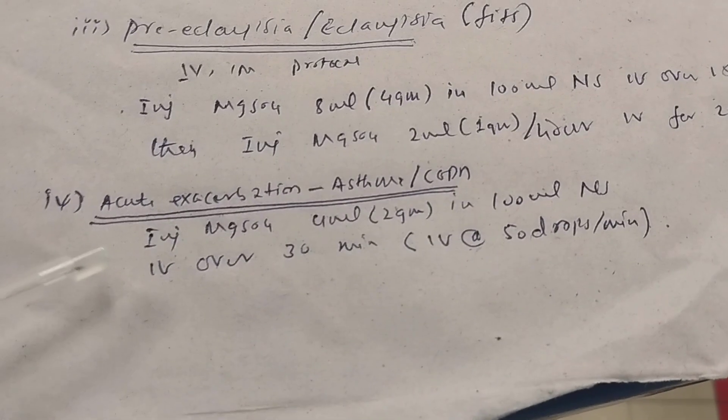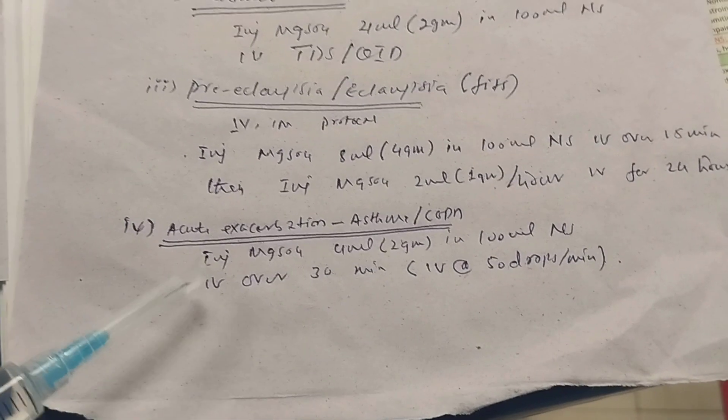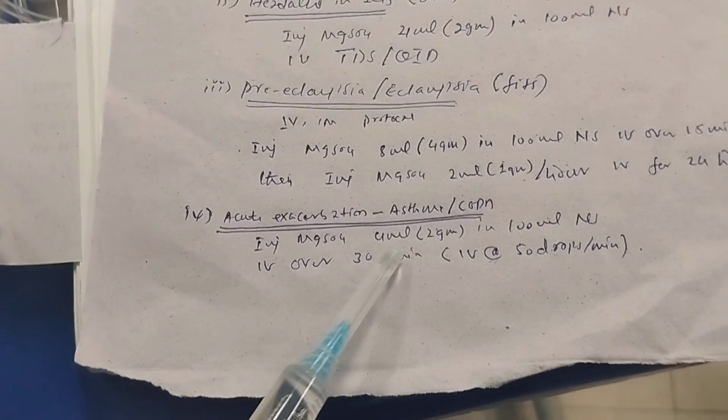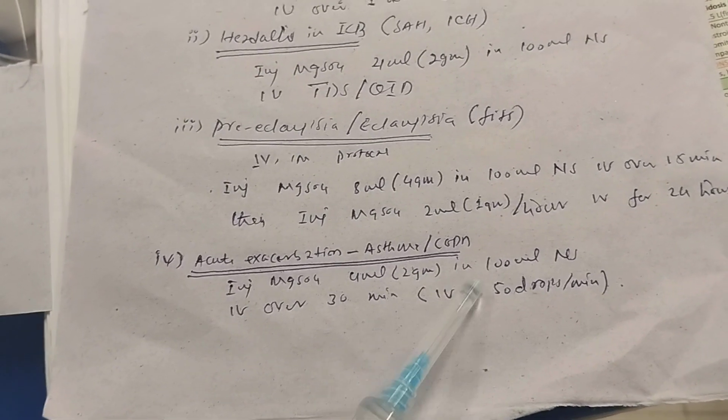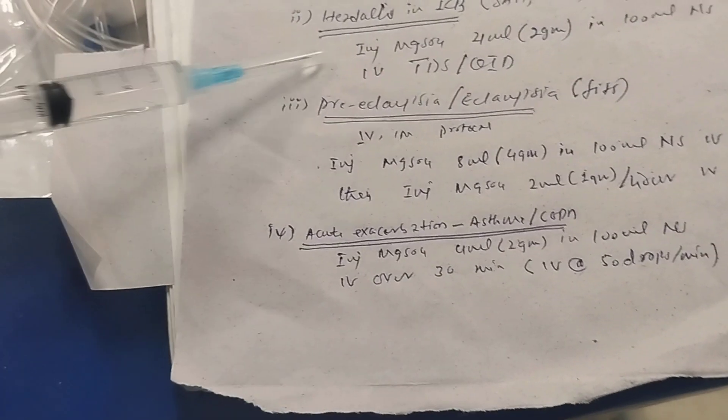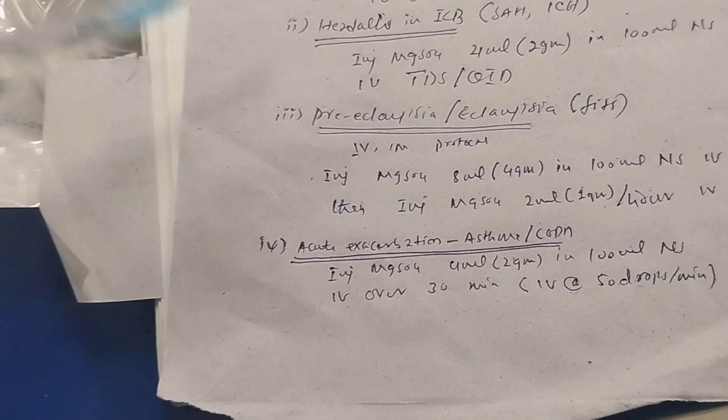For acute exacerbation of asthma and COPD, give injection magnesium sulfate 2 grams (4 ml) in 100 ml normal saline IV over 30 minutes — the same preparation method as for status migraine, acute migraine, or headache in intracranial bleed. Thank you.